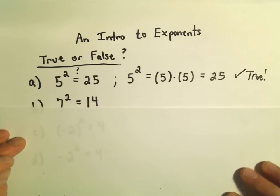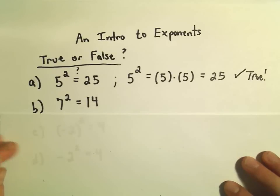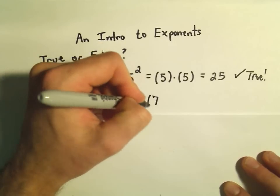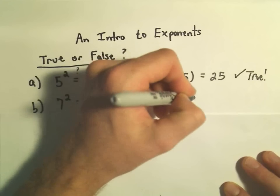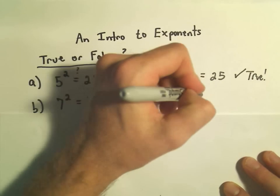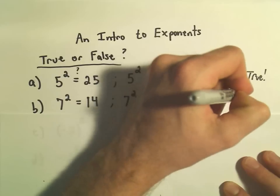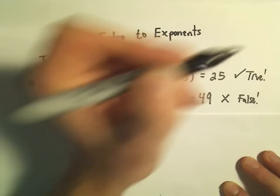Let's look at the second one. We have 7 squared equals 14. If we use the same idea, 7 squared means we have 7 times 7. But 7 times 7 gives us 49, not 14. So this statement is definitely false.